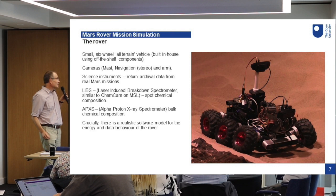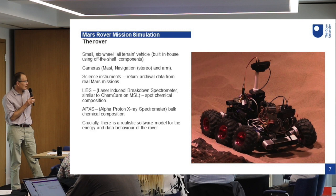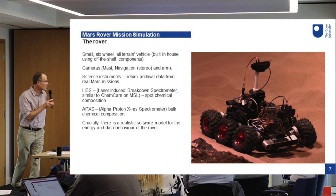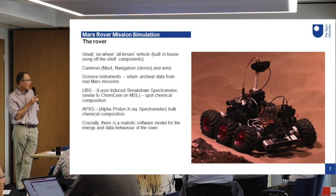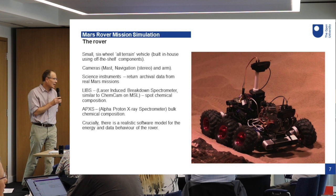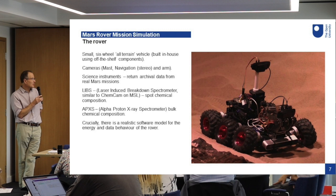The actual rover itself is just a six-wheel, very small rover that we built using off-the-shelf components. We've got some instruments on it — the real instruments are cameras: a mast camera you can see sticking out at the top, a navigation camera, and a camera on an arm.